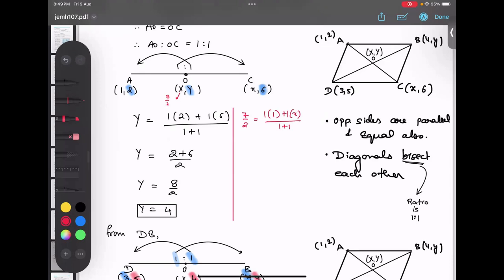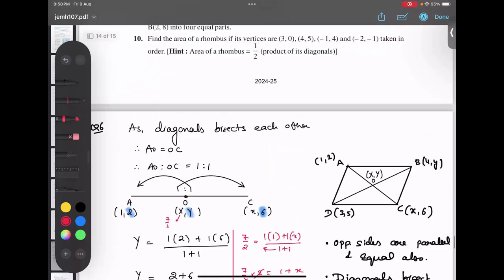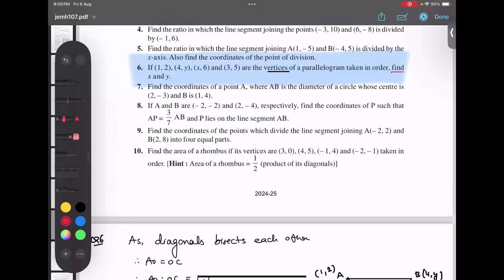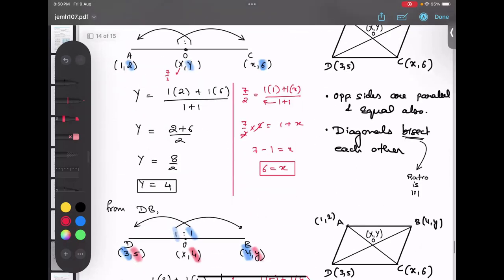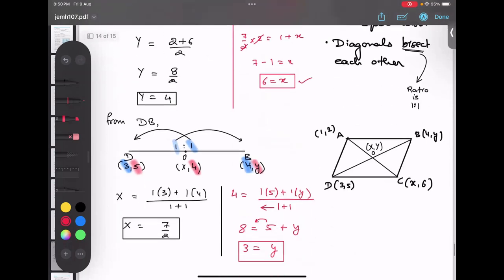Now my capital X value which is the point O is 7 upon 2. So I can go back over here and replace this thing by 7 upon 2. Again I will do the same thing. 7 upon 2 equals to 1 into 1 plus 1 into x upon 1 plus 1. I'll shift this thing to the other side. 7 upon 2 into 2, 1 plus x. So this is getting cancelled. 7 minus 1 equals to x, so 6 is the small x value. So I guess the question was find the x and y value. So my x value is 6 and y value is 3.